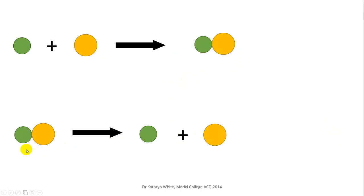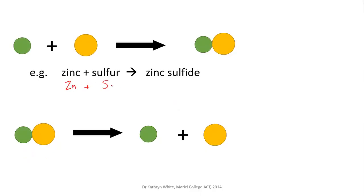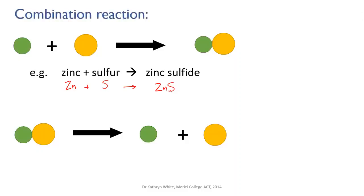An example of putting stuff together would be the reaction between zinc and sulfur. You mix zinc powder and sulfur powder together, heat it to get the reaction going, and it transforms into the ionic compound zinc sulfide. This kind of reaction where you combine two reactants into one product is called a combination reaction.